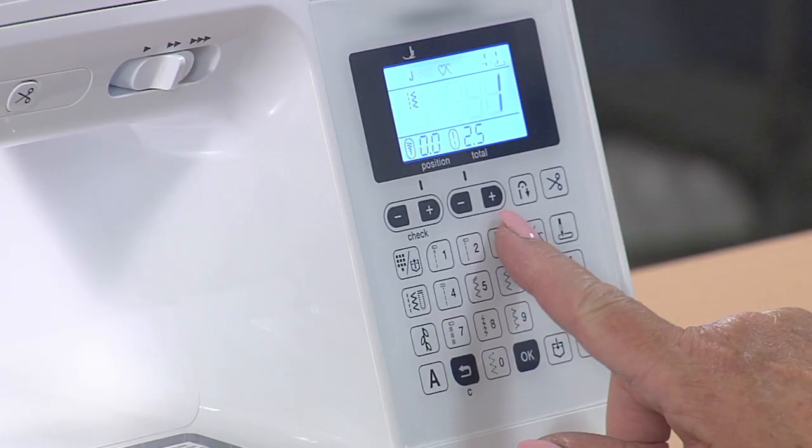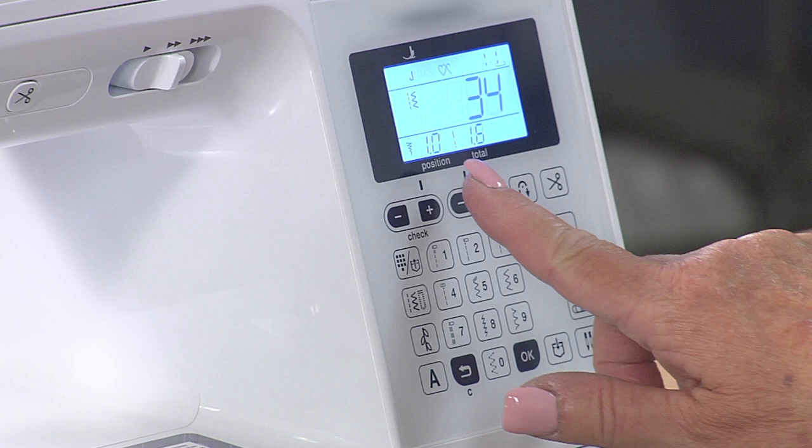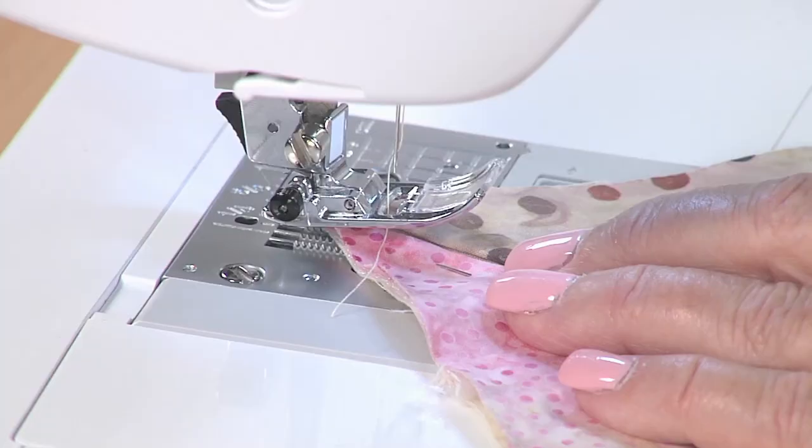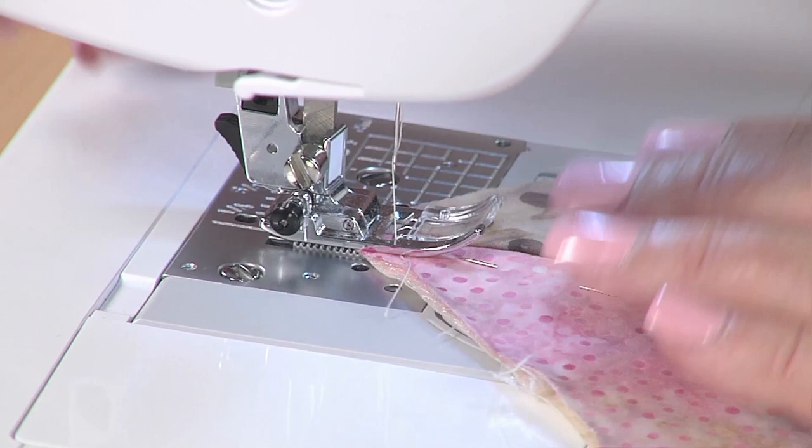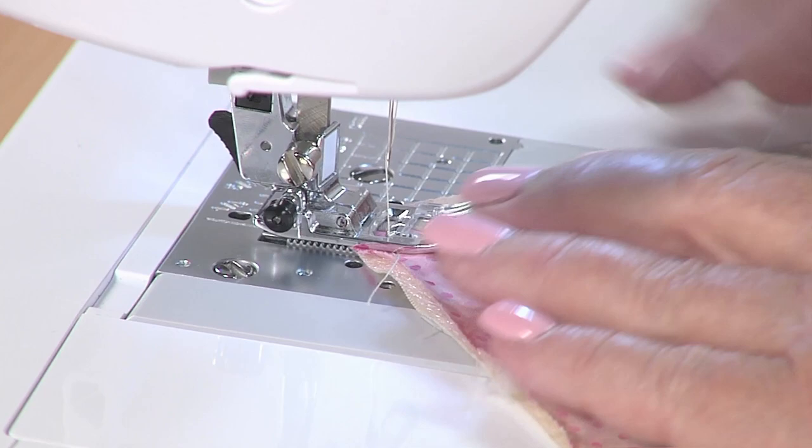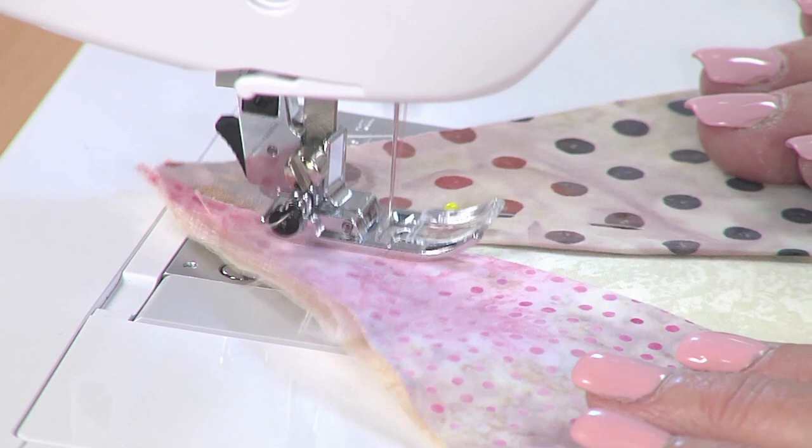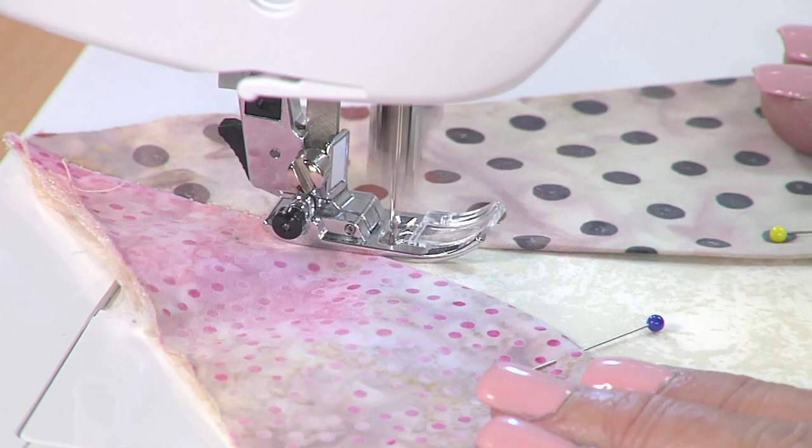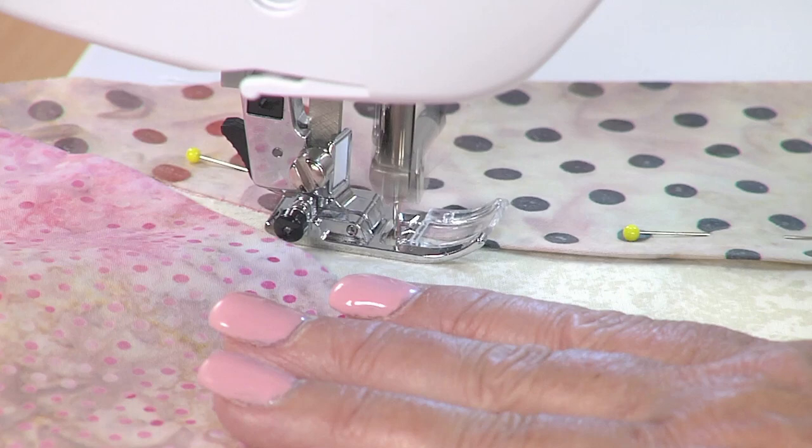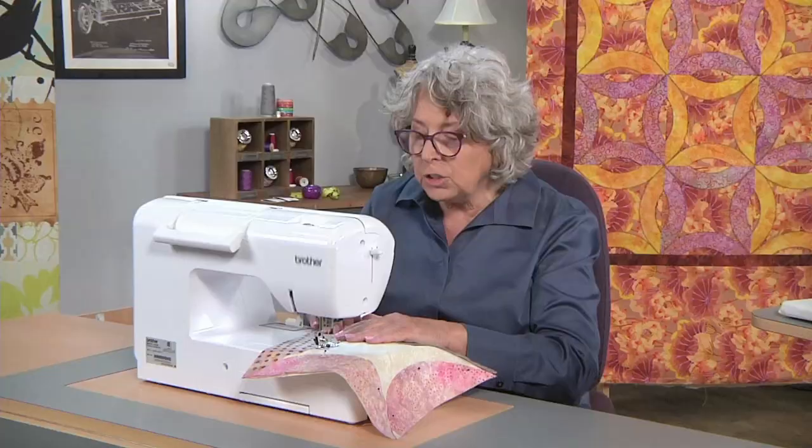I'm going to change the stitch again. I'm going to be using the blind hem stitch and I'm going to move it way over and make the stitch length very short and I'm going to put the foot down and start sewing. And what this is going to do is attach each little piece of applique and you won't even be able to tell. On this particular one, I'm going to be using a variegated thread. It had all of the colors in my variegated fabric so it's working out really nicely.